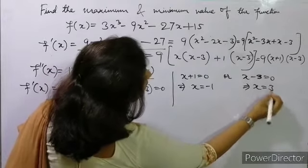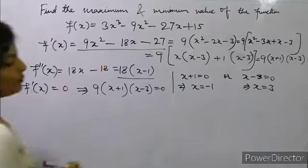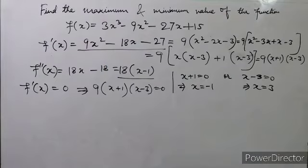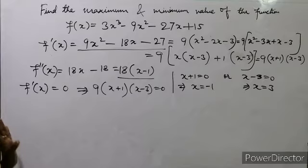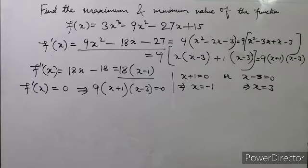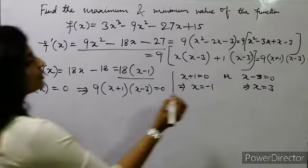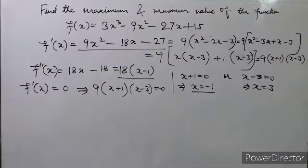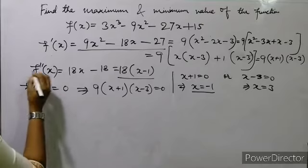In the first case x + 1 = 0, so x = -1. In the second case x - 3 = 0, so x = 3. Both these values we will now put into f(x) and f''(x).